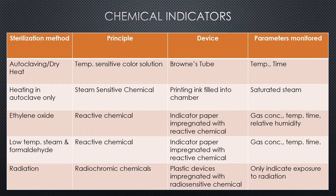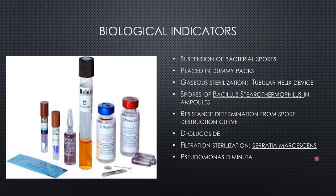For radiation sterilization, radiochromic chemicals are used as the basic material. Plastic devices impregnated with radio-sensitive chemicals undergo a color change at relatively low radiation doses. The parameter indicated is only exposure to radiation. These are the different types of chemicals used for different sterilization methods — either complete melting of the indicator material or a drastic color change occurs, indicating whether sterilization is complete or not.